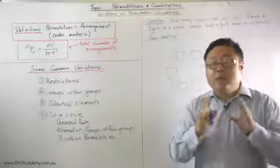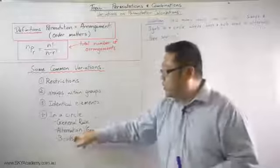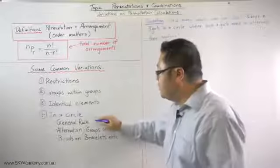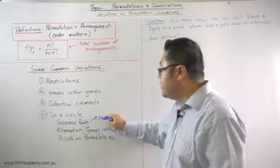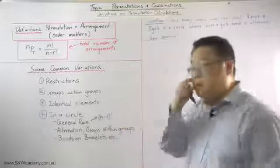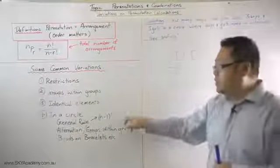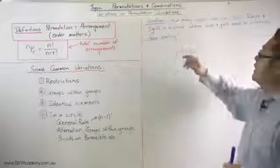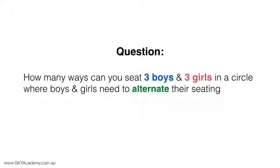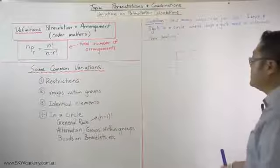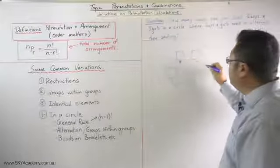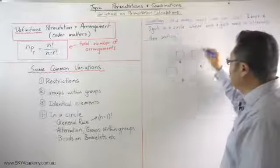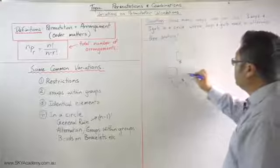Welcome back. We are now going to look at another example — alternation. We worked out that the general rule for seating N people around a circle where there are N positions is N minus one factorial. When it comes to alternation, things get a little bit trickier but not that much. The question is: how many ways can you seat three boys and three girls in a circle where the boys and girls need to alternate in their seating?